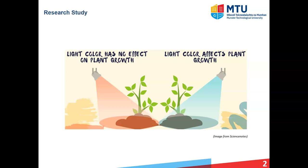Let's look at some examples of research studies with particular research questions. Let's say you're a biologist and the research question you have in mind is: does the color of light influence plant growth? In this case, you take two samples — one sample of plants exposed to colored light, and another exposed to regular light with no color. Over a period of time, you monitor the plants' growth, and at the end you have a data set. You can perform some analysis and test whether the light with color had an effect on plant growth.